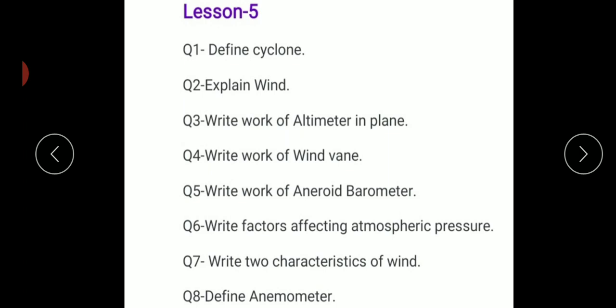Define cyclone. Cyclone is basically an area of low atmospheric pressure characterized by inward spiraling wind. It can rotate counterclockwise or clockwise. Then what is wind? Basically wind is, in simple words, air in horizontal motion.